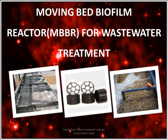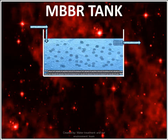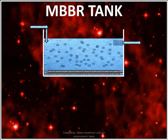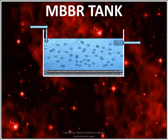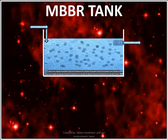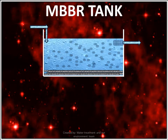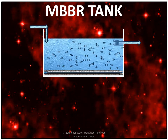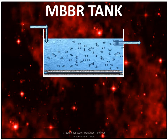Moving bed biofilm reactor, or MBBR, for wastewater treatment. This is the schematic diagram of an MBBR tank. The process consists of adding small cylindrical polyethylene carrier elements which have a specific gravity of 0.96 grams per centimeter cube in aerated or non-aerated basins to support biofilm growth. The small cylinders are about 10 mm in diameter and 7 mm in height, with a cross inside the cylinder and longitudinal fins on the outside.